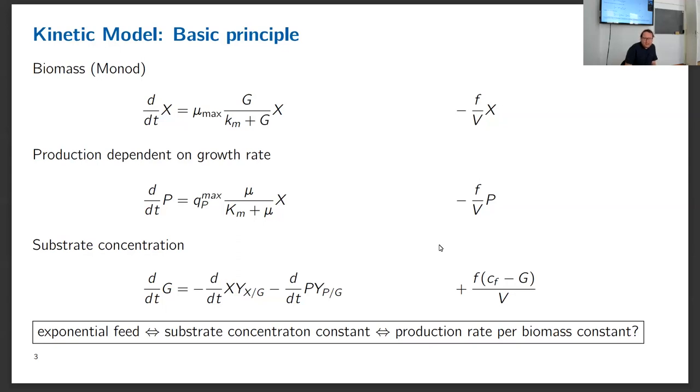If I have a constant feed production, I have the fed-batch model. The principle for a kinetic model is that if I have an exponential feed, the substrate concentration will be constant. So on a cellular level I am in steady state, and therefore the growth rate and the production rate per biomass are constant.